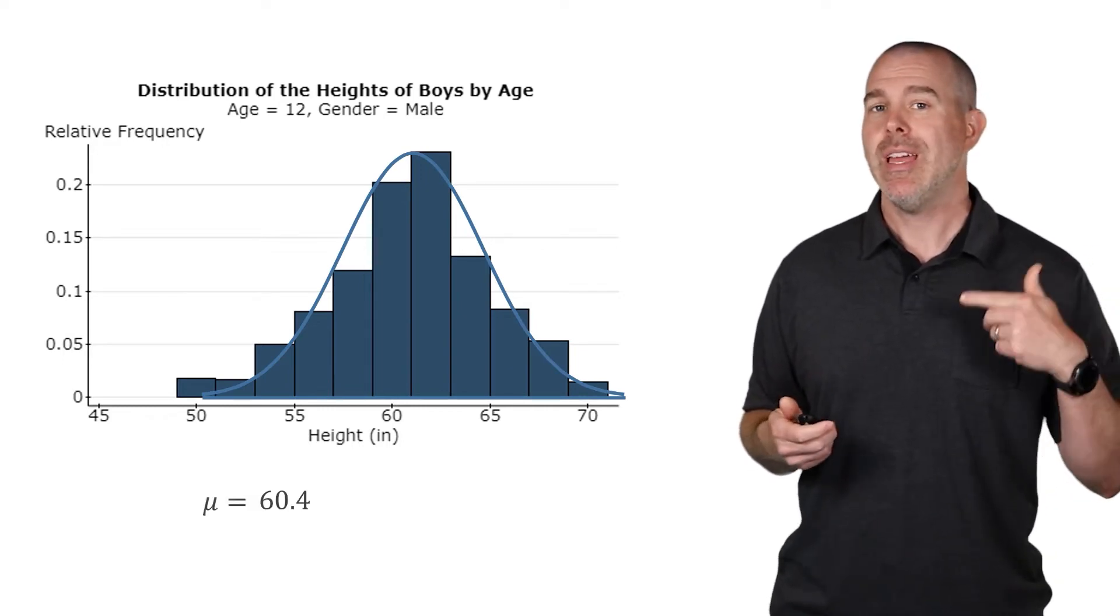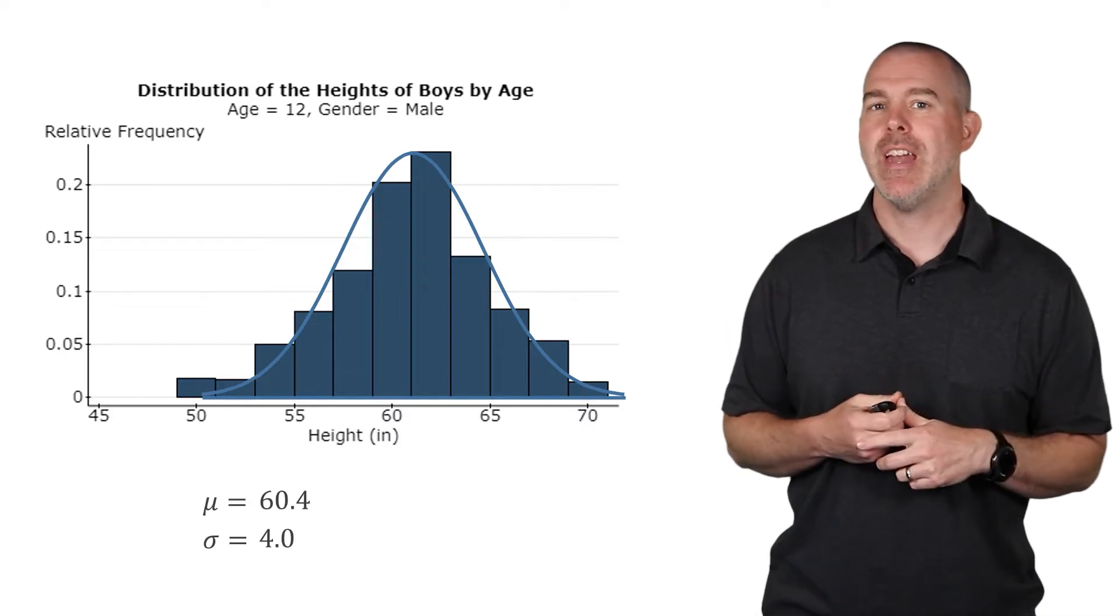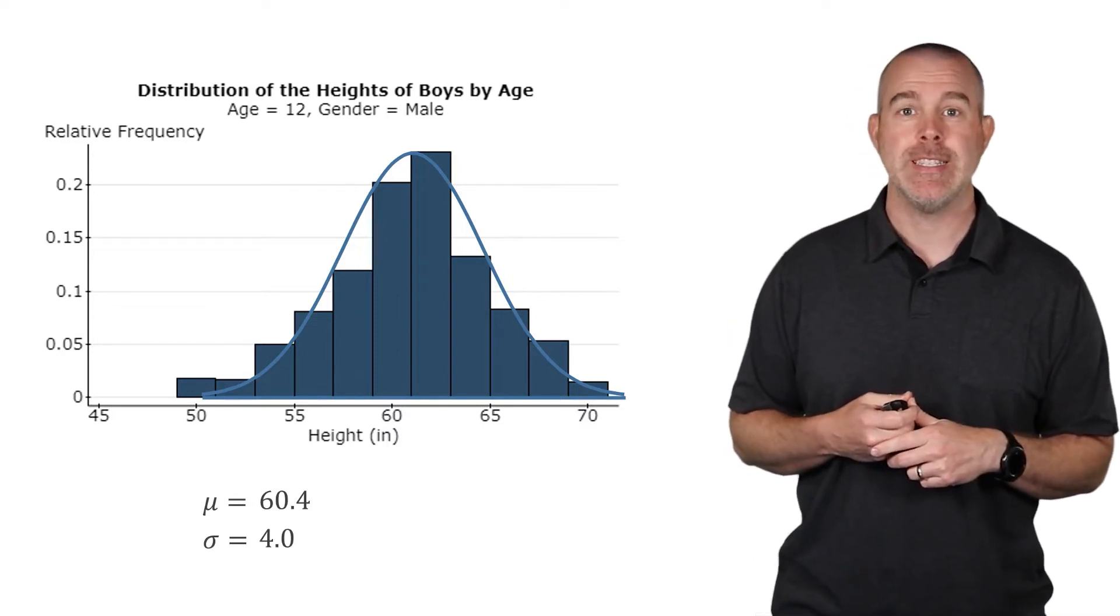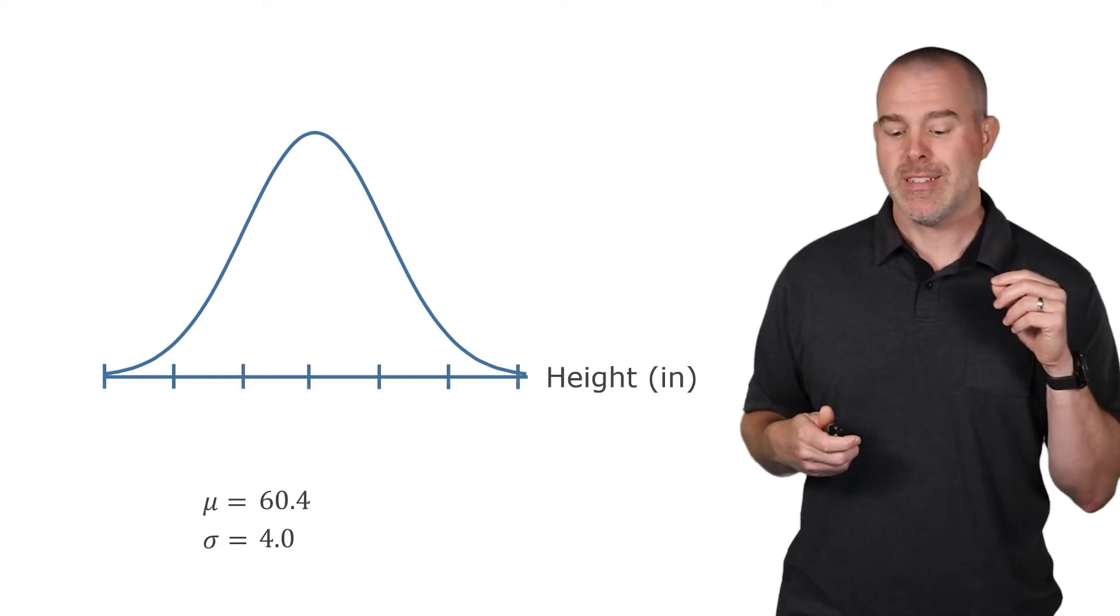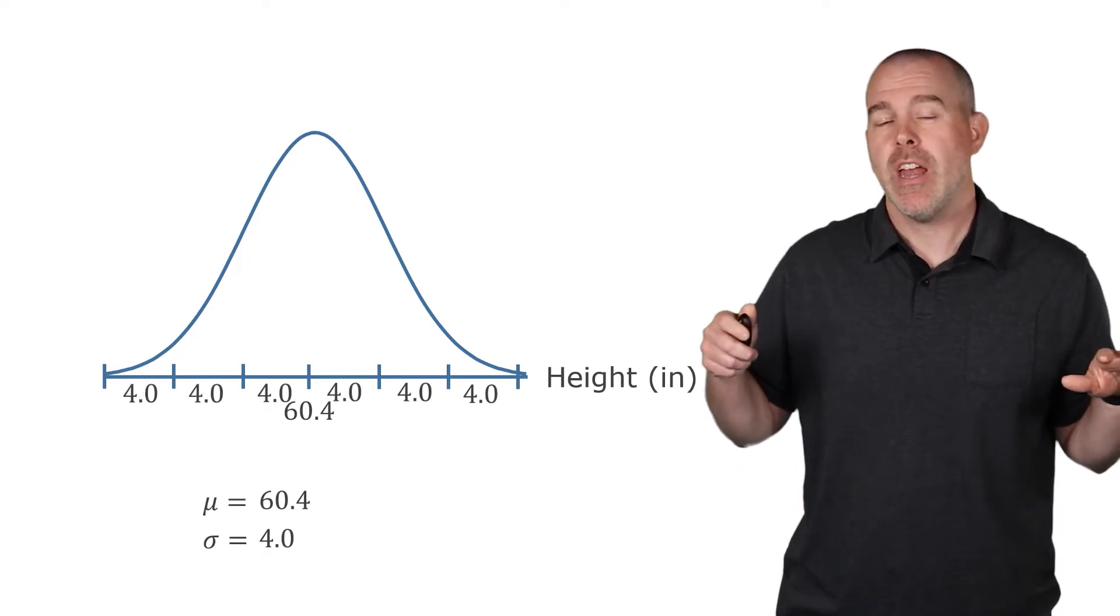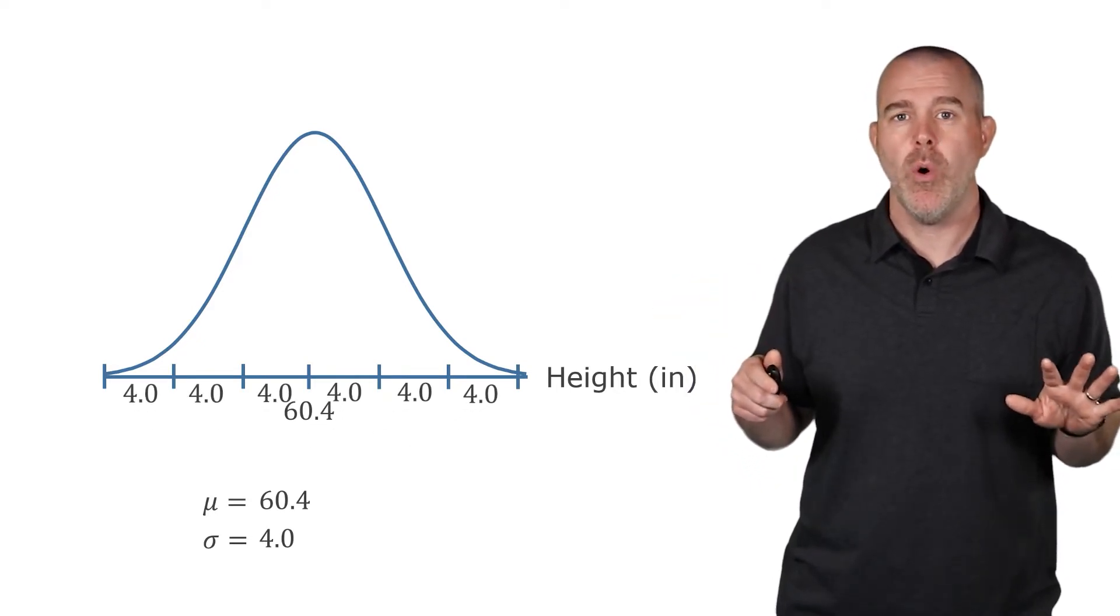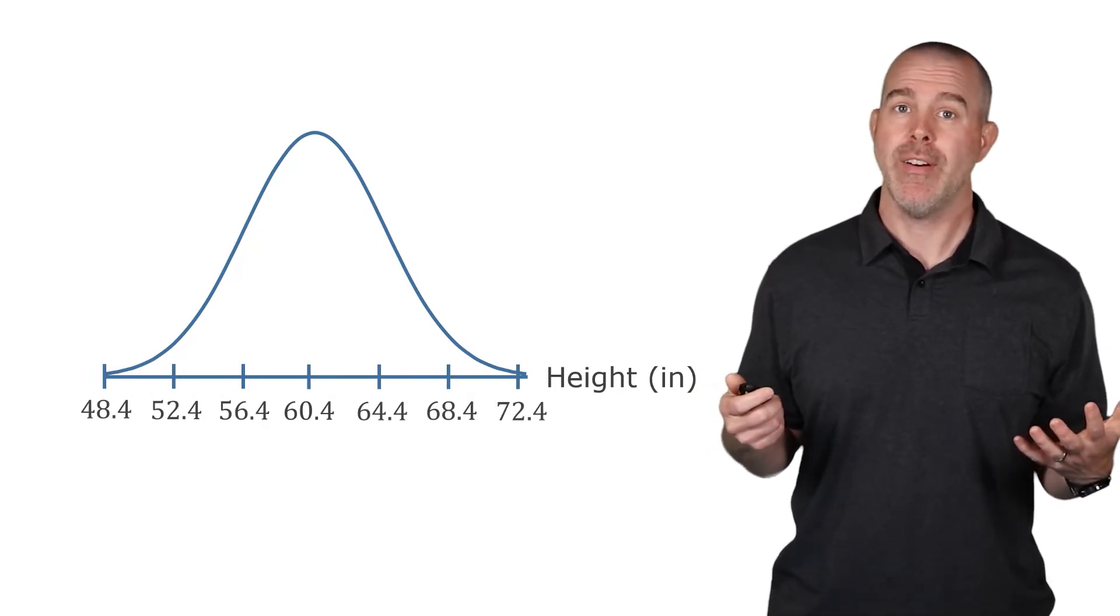Calculating the mean and standard deviation, we have a mean of 60.4, a standard deviation of 4.0. If we try to make our normal distribution, then 60.4 goes in the middle, and then all of the standard deviations, out three standard deviations, should be 4. And so if we add those together, here is our distribution of heights.